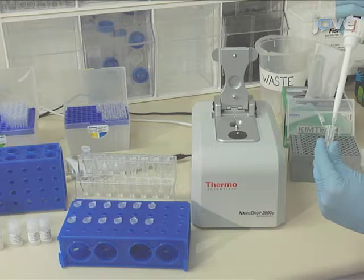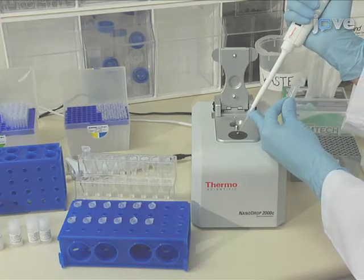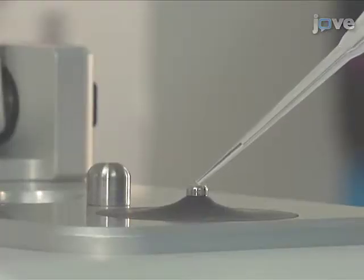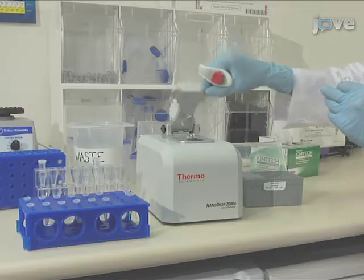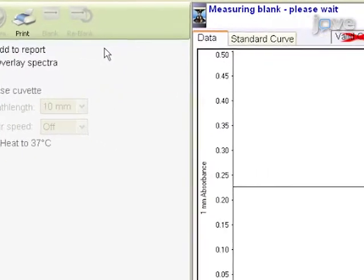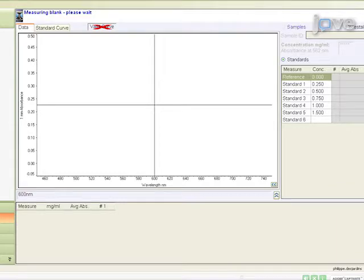Establish a blank using the appropriate buffer. The blank for colorimetric assays is generally deionized water. Pipet 2 mL of water onto the bottom pedestal and lower the arm. Click blank. Only one blank is necessary to cover all subsequent measurements of the reference and standards.